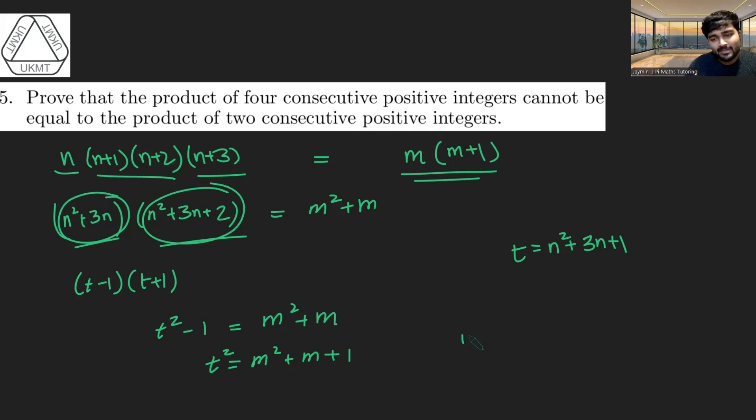From this equation, we get that m squared must be less than T squared, because T squared is m squared plus some other positive stuff. But this thing here is clearly less than m squared plus 2m plus 1, because m is a positive integer. And this is just m plus 1 squared. And so that means that T squared is sandwiched between m squared and m plus 1 squared.